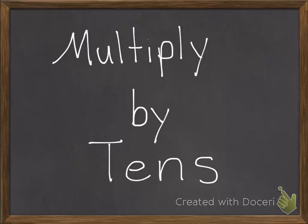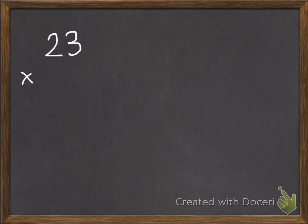Today we're going to learn how to multiply by tens. Here's my first example, 23 times 40.